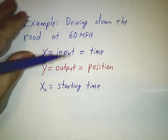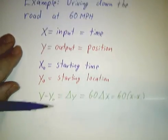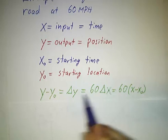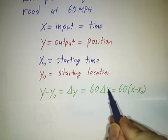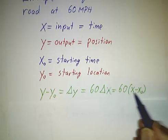If x0 is our starting time, y0 is our starting location. So y minus y0 is how far we've traveled. And that's 60 miles an hour times how long we've been driving. So it's 60 times x minus x0.